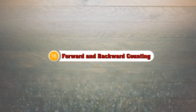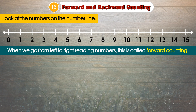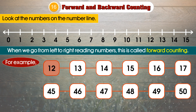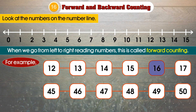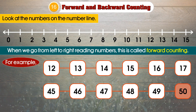Forward and backward counting. Look at the numbers on the number line. When we go from left to right, reading numbers, this is called forward counting. For example: 12, 13, 14, 15, 16, 17... 45, 46, 47, 48, 49, 50.